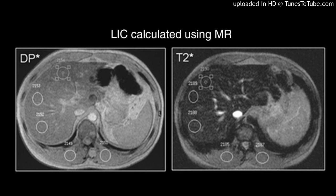Cardiac and hepatic hemosiderosis was assessed using T2 magnetic resonance imaging (MRI). Ferritin levels were measured using the enzyme immunoassay method.